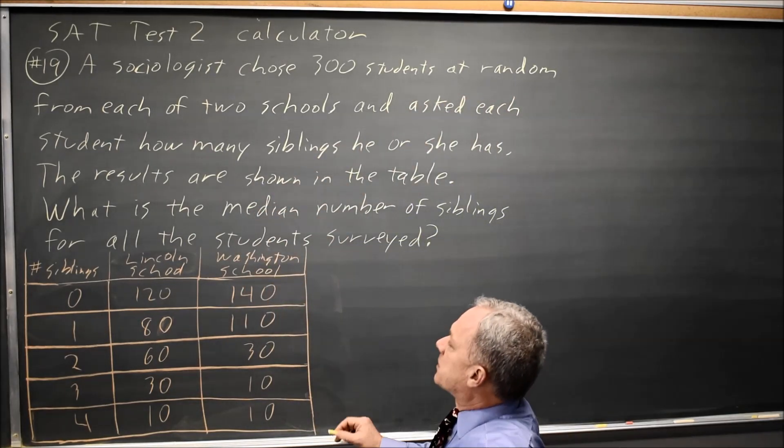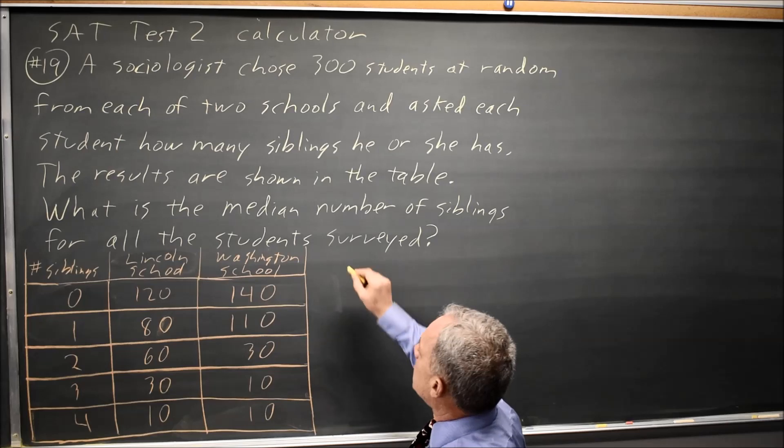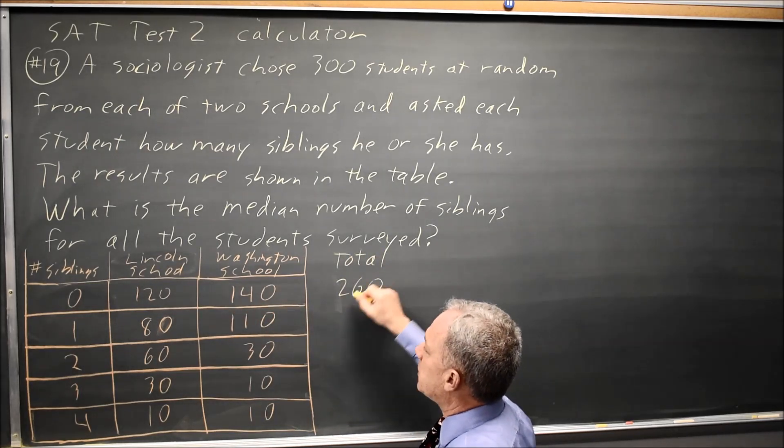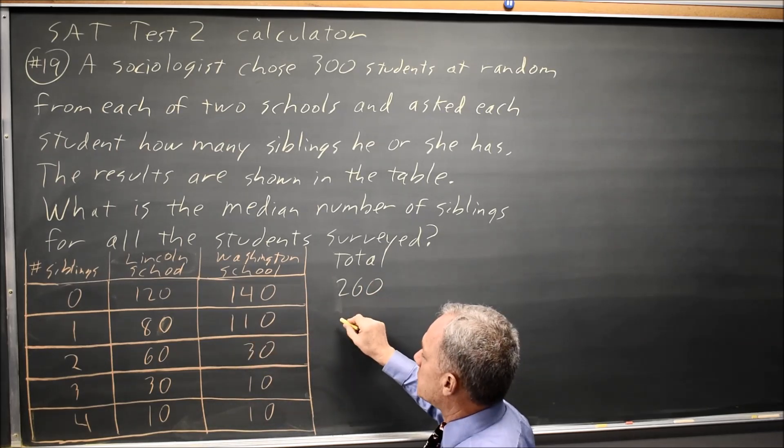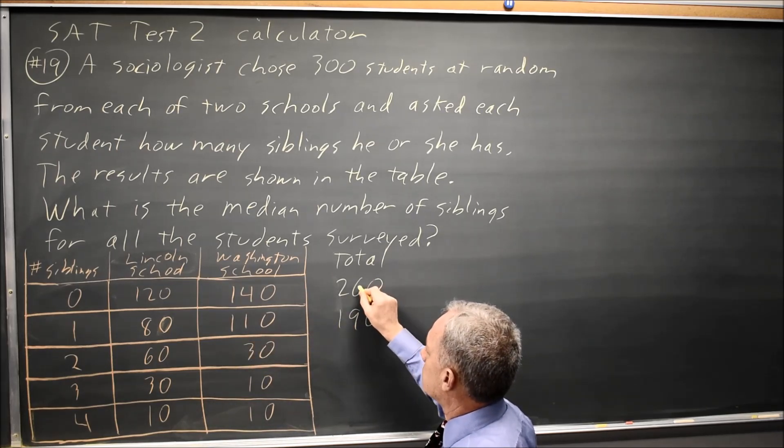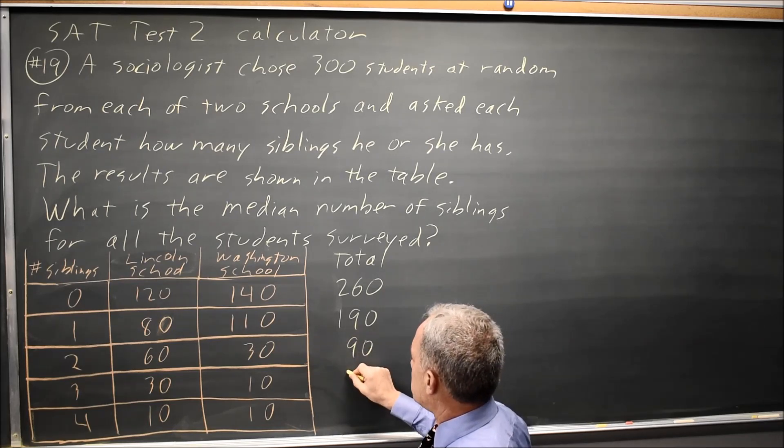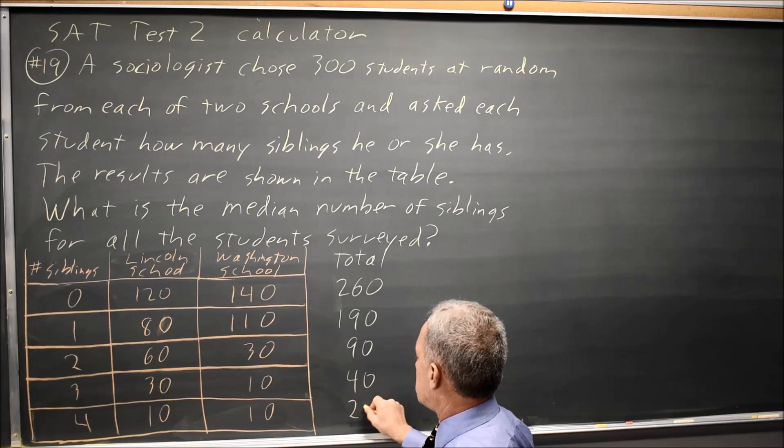So one way to do this is take the total. 120 plus 140 is 260. 80 plus 110 is 190. 30 plus 60 is 90. 30 plus 10 is 40. And 10 plus 10 is 20.